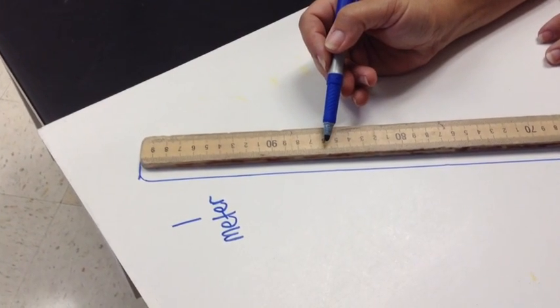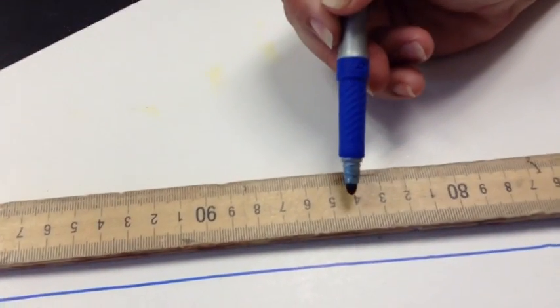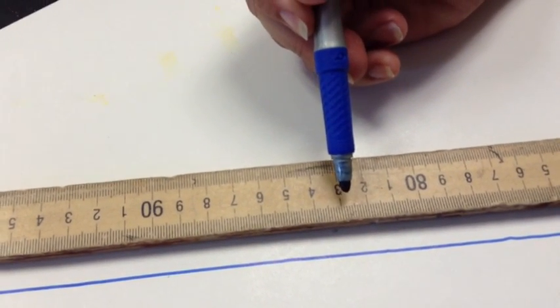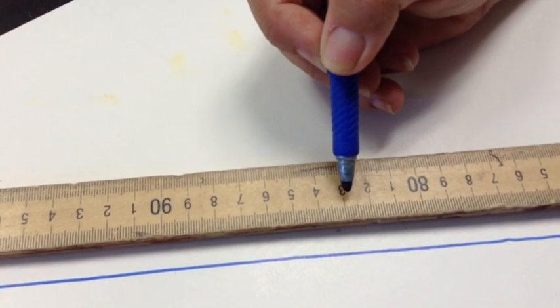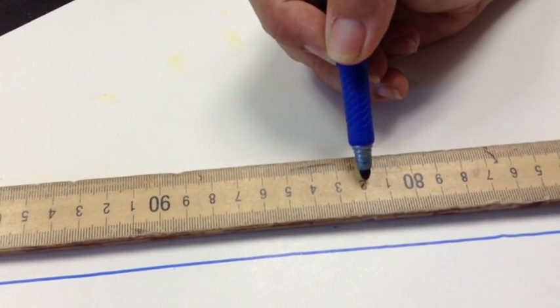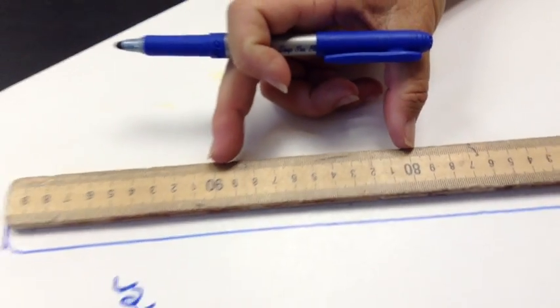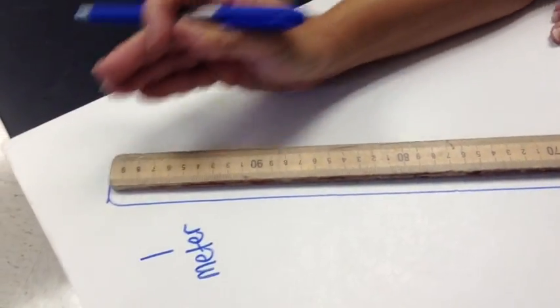Those are the millimeters, and it takes 10 of those to make a centimeter. And then when you get 10 of those together, you've got a decimeter.